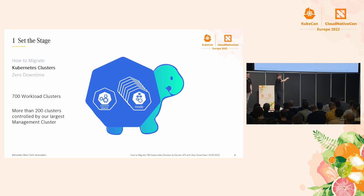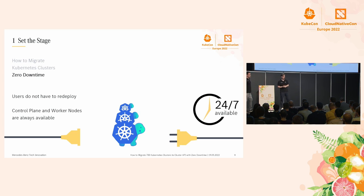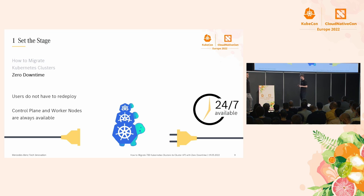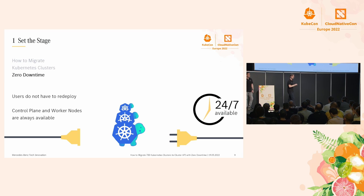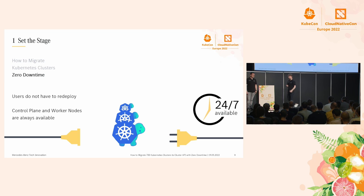The architecture of Cluster API allows an incremental transitioning path — you don't have to do everything at once; you can split it up and adapt only the parts you need. Each workload cluster — what we give to our users — consists of a dedicated control plane and multiple worker nodes. We want to migrate 700 of those to be controlled by Cluster API. Our largest management cluster controls up to 200 workload clusters. Zero downtime was a critical requirement: we have business-critical applications and will not touch the users' workload.